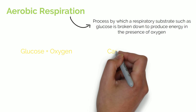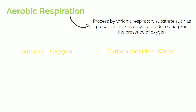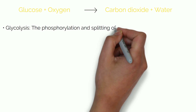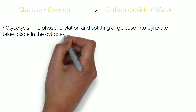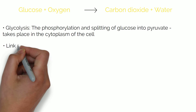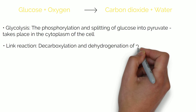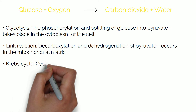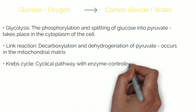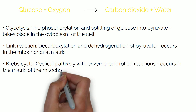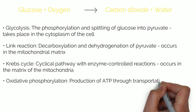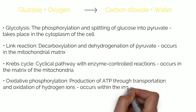Aerobic respiration is the process by which a respiratory substrate such as glucose is broken down to produce energy in the presence of oxygen: glucose plus oxygen gives carbon dioxide and water. The four stages of aerobic respiration are: glycolysis, the phosphorylation and splitting of glucose into pyruvate in the cytoplasm; the link reaction, decarboxylation and dehydrogenation of pyruvate in the mitochondrial matrix; the Krebs cycle, a cyclical enzyme-controlled pathway in the mitochondrial matrix; and oxidative phosphorylation, the production of ATP through transportation and oxidation of hydrogen ions within the inner mitochondrial membrane.